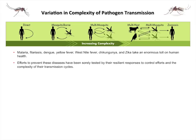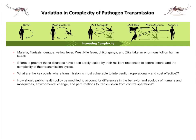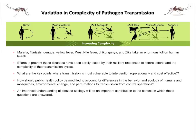Our efforts to control them largely have not been as successful as we would like. They're complicated transmission cycles; they're resilient to our efforts. So we can ask: what are the key points in that transmission cycle most vulnerable to intervention, to prevent people from getting infected and sick? Should public health policy be modified to account for differences in the ecology and behavior of humans and mosquitoes? The bottom line I want to convey is that an improved understanding of disease ecology is really quite important, because that's the context in which we make decisions about how to improve public health policy.